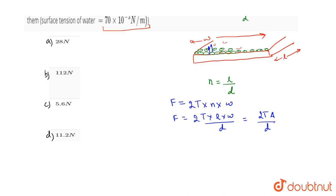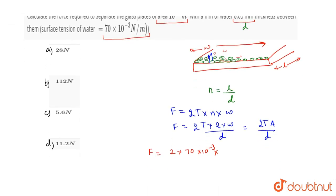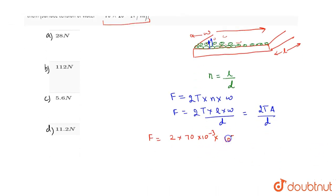we have F equals 2 multiplied by 70 × 10^-3. The area given is 10^-2, and D is 0.05 mm, which means 5 × 10^-5 meters. If we substitute the values, terms will cancel.